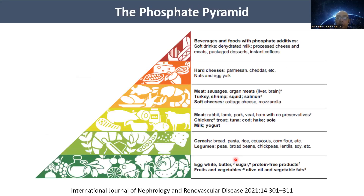A good example of phosphorus education is the phosphate pyramid. At the base are favorable foods with low phosphate content, like egg white, butter, sugar, protein-free products, fruits and vegetables, and olive oil. As you move upward, phosphorus content and bioavailability increase. At the top — to be avoided — are beverages and foods with phosphate additives, such as soft drinks, dehydrated milk, processed cheese, meats, bagged desserts, and instant coffees.